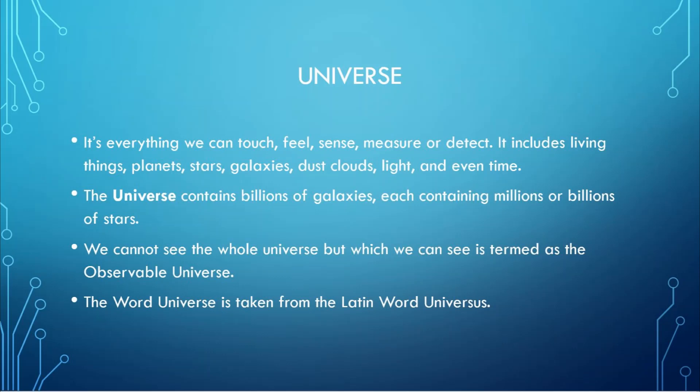So, the universe contains billions of galaxies, each containing millions or billions of stars. We cannot see the whole universe or in simple words, we can see only a part of the universe. So, that part which we can see is known as the observable universe. The word universe is taken from the Latin word universus which means all.